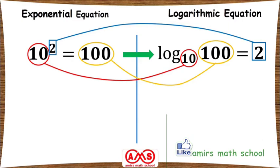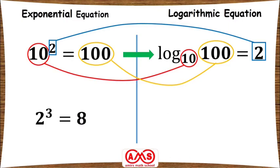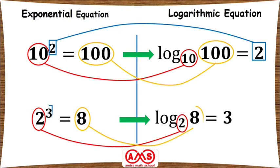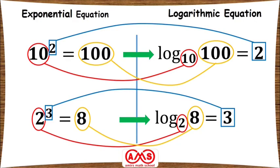Let's see another example: 2 cubed equal to 8. If we want to write 2 cubed equal to 8 in logarithmic form, we write log base 2 of 8 equal to 3. This 2 is written as the base of the logarithm, 8 is written here, and 3 is written here.